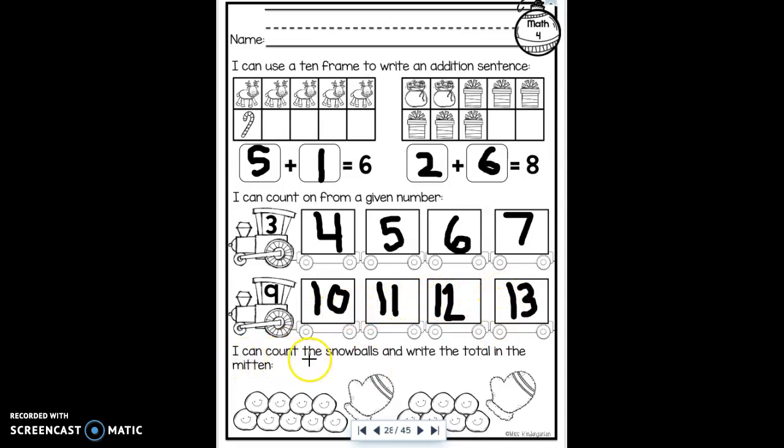At the bottom, I have to count the snowballs and write the total in the mitten. So let's count how many snowballs are in this set. One, two, three, four, five, six, seven, eight, nine. I have nine snowballs here. And I have one, two, three, four, five, six, seven snowballs here. Nine and seven.